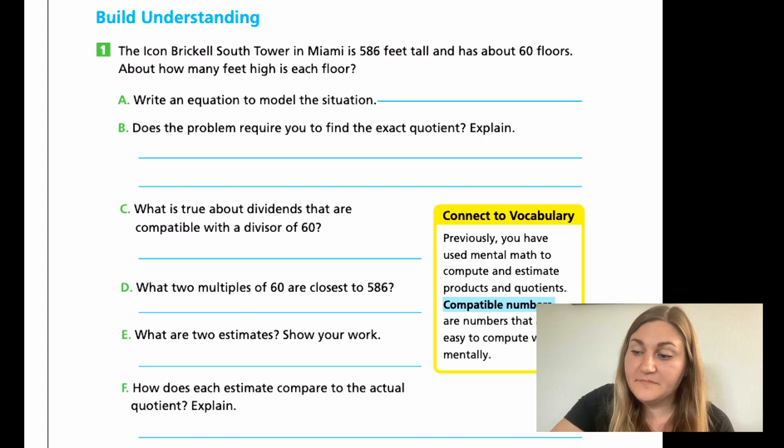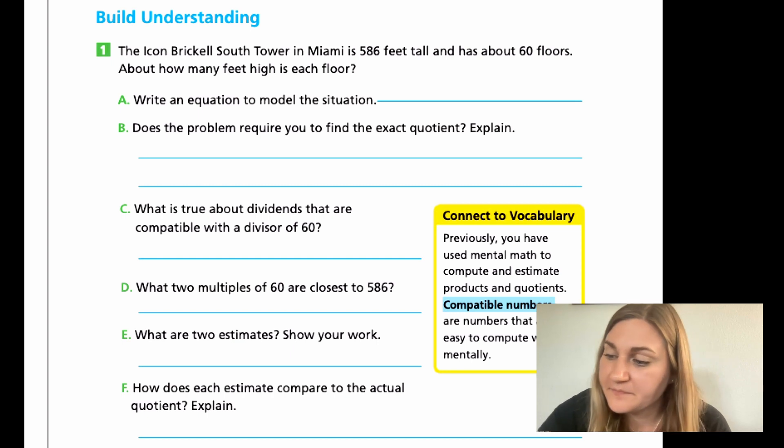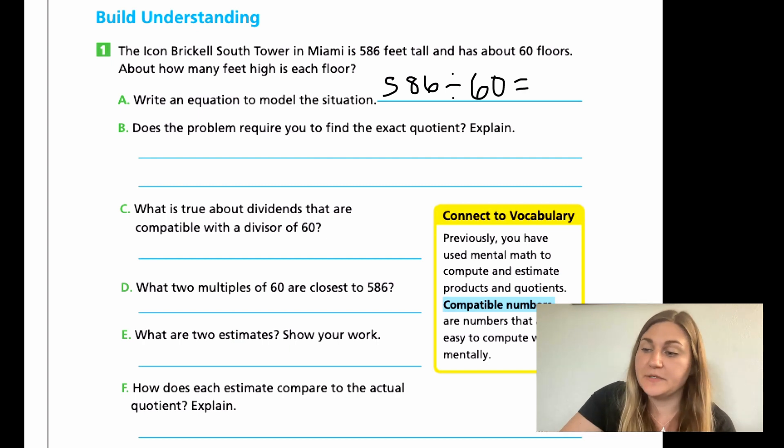Hopefully you had time to complete those three problems. So write an equation to model the situation. I'm going to do 586 divided by the 60 floors. That's going to be my equation.